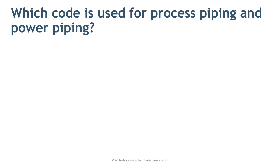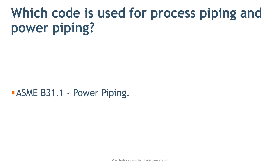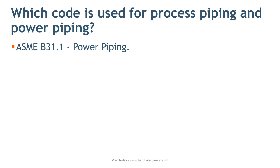Now let's move to the next question: which code is used for process piping and power piping? To answer this question, you need to know the codes published by ASME under the B31 series. The ASME B31 series covers various codes used for different types of pressure piping.